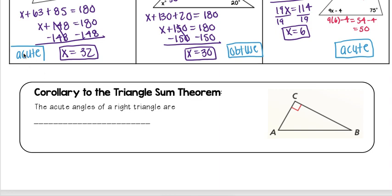Now let's talk about the corollary to the triangle sum theorem. This corollary states that the acute angles of a right triangle—importantly, only for right triangles—are complementary. If you remember from sections 1.5 to 1.6 near the beginning of the school year, that means